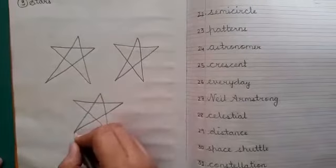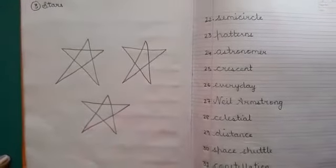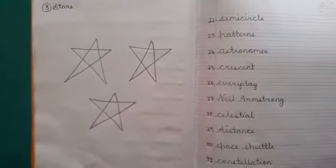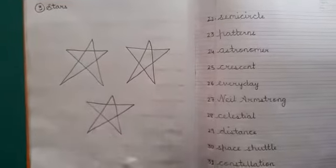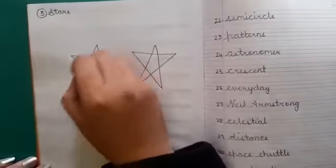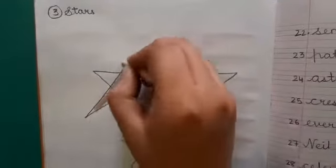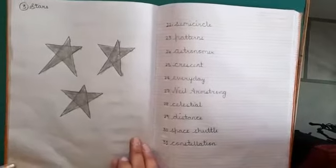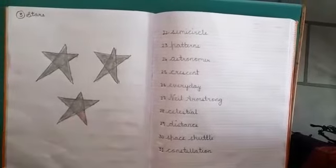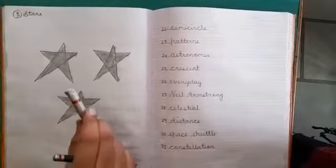You can take help of a scale if you want. Color the stars with gray color. In this manner you have to color the stars with gray color.